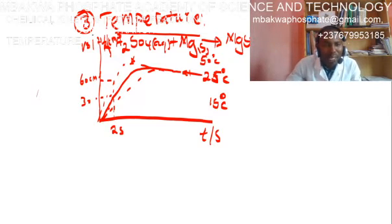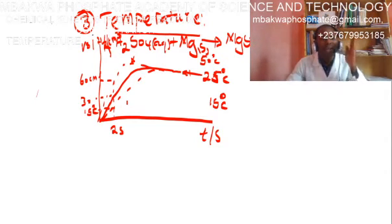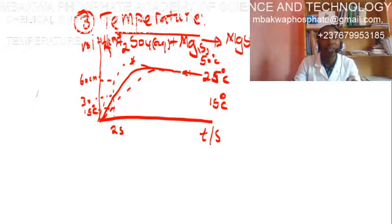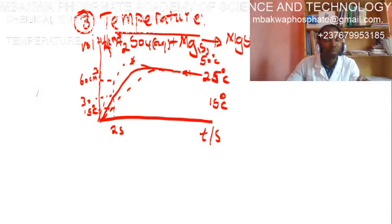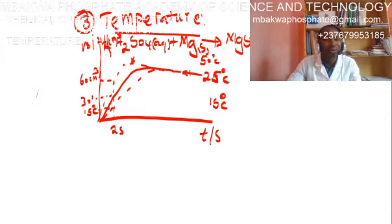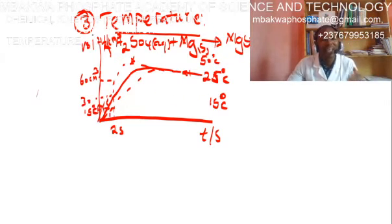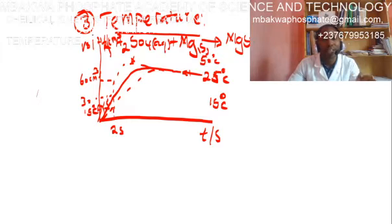At two seconds at 25°C we expect about 30 cm³ of hydrogen. At 50°C at the same two seconds, we expect about 60 cm³. At 15°C, we expect about 15 cm³ of hydrogen gas produced. Decrease in temperature leads to a decrease in the rate of reaction; increase in temperature leads to an increase in the rate of reaction.